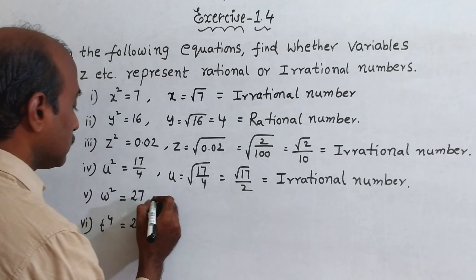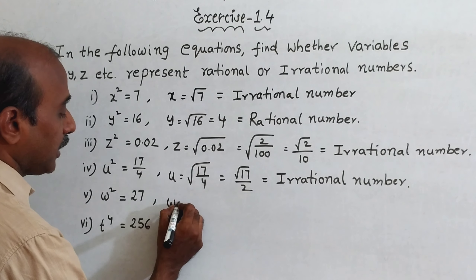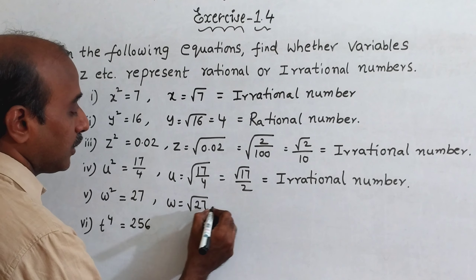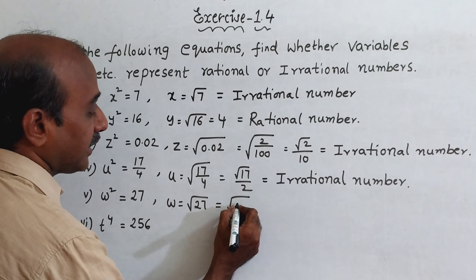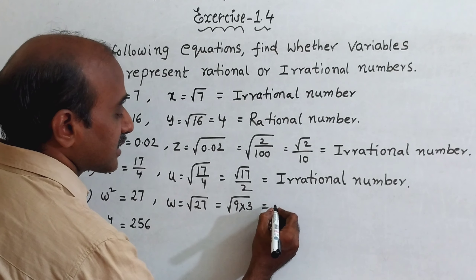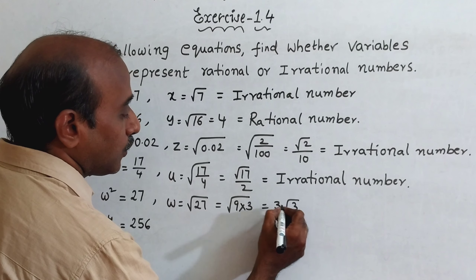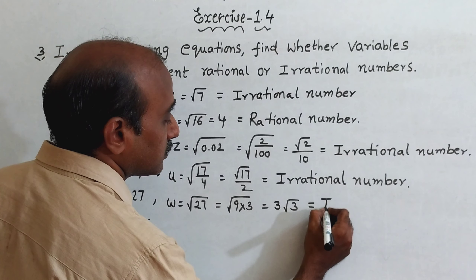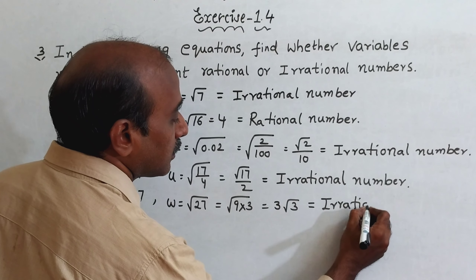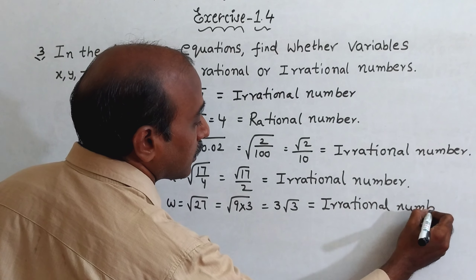Next one: w squared is equal to 27, so w is equal to under root of 27. You can write 27 as 9 times 3, so root 27 is root 9 times root 3, which is 3 root 3. 3 root 3 is an irrational number.